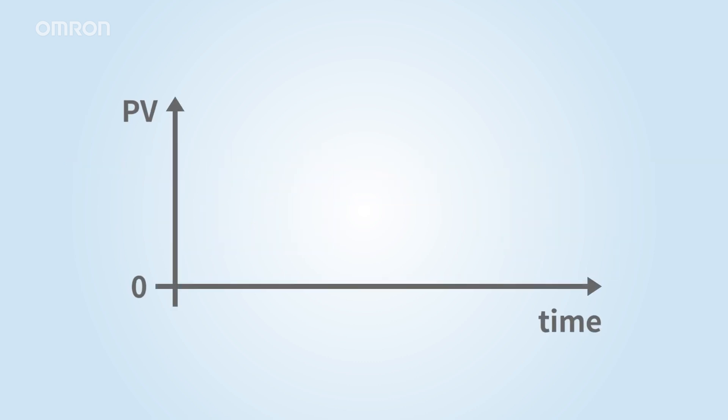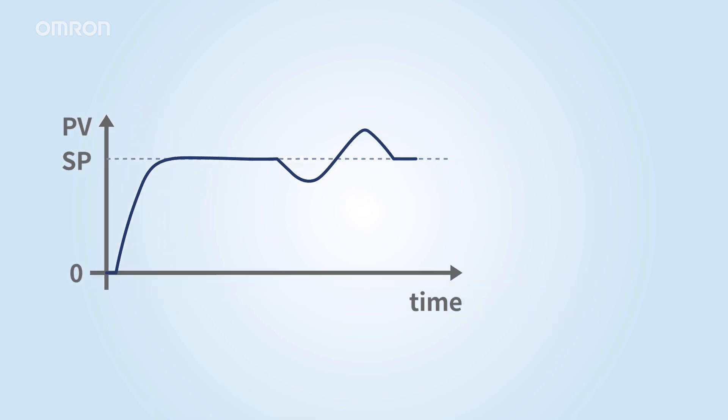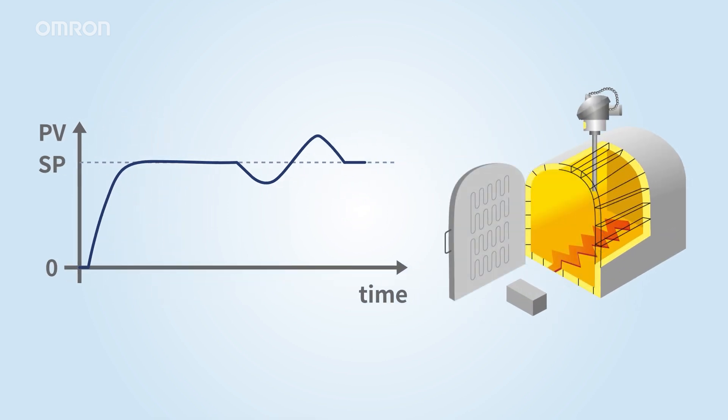With the explanation so far, stable heating to the set temperature has been achieved. However, even when the set temperature is stable, various factors can cause disturbances, leading to temperature fluctuations. For example, opening the door of an electric furnace to load a workpiece causes the temperature to drop.